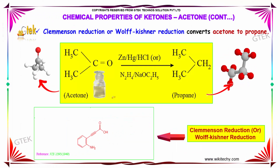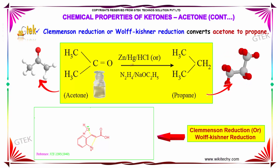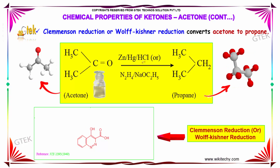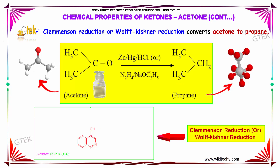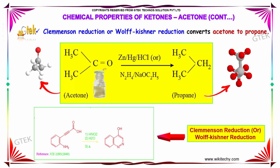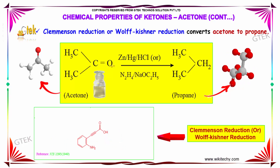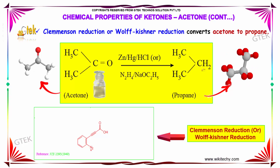Clemmensen's reduction or Wolf-Kishner reduction converts acetone to propane. When acetone is reacted in the presence of zinc, mercury, or HCl, it forms propane. The HCl attacks the carbonyl carbon forming a CH2 bond, and the oxygen leaves with 2 hydrogen atoms, forming water as a byproduct.